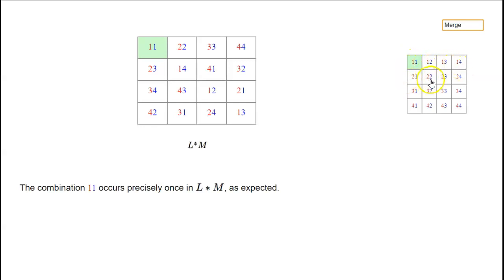This has all possible combinations: 1,1; 2,1; 3,1; 4,1; 2,1; 2,2; 2,3; 4,4, etc., all listed in the obvious order. The claim is that all these combinations appear in a more random order over in L star M, but they do all appear exactly once, as we see here.